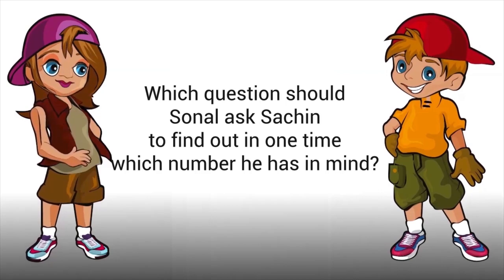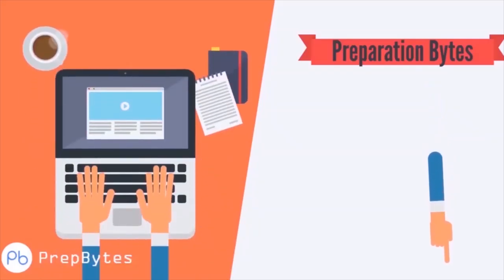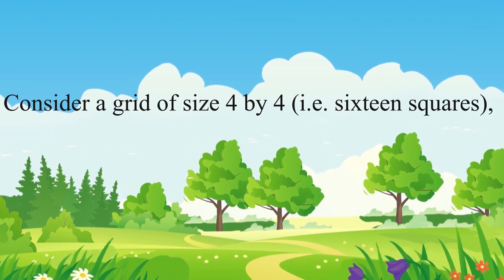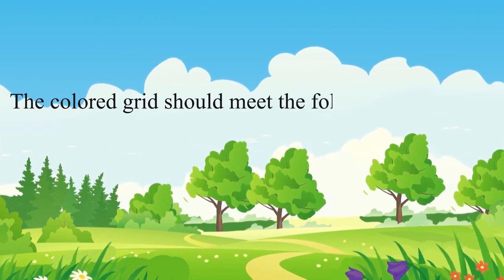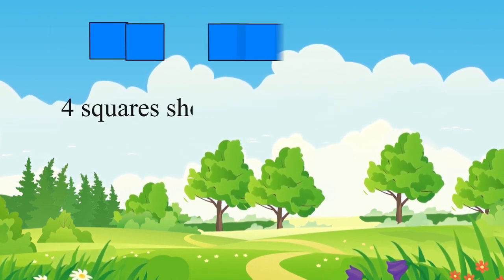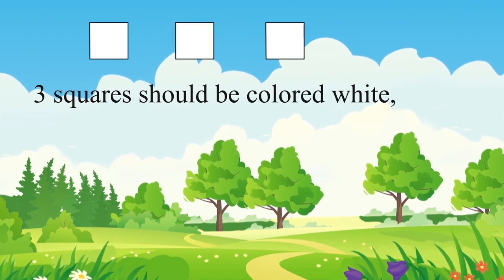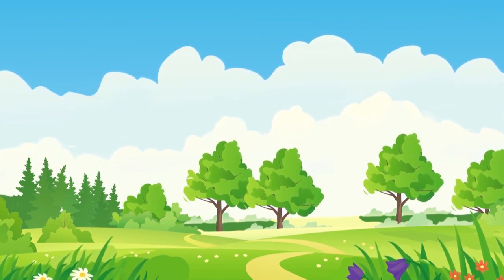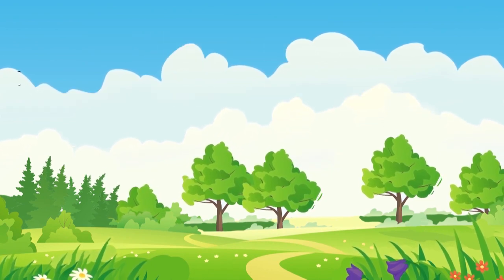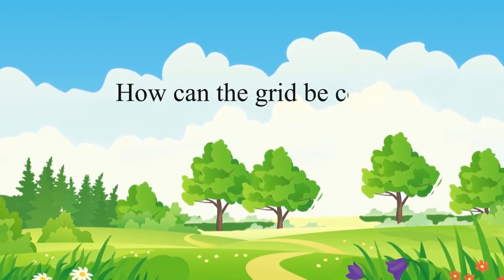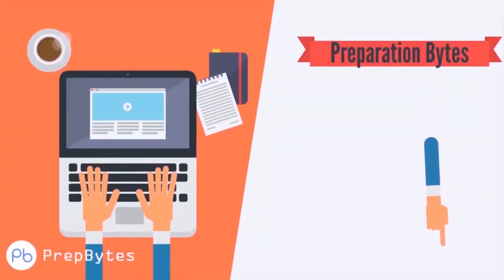Consider a grid of size 4 by 4 — that is 16 squares — where all squares should get a color. The colored grid must meet the following conditions: four squares colored blue, three squares colored red, three squares colored white, three squares colored green, three squares colored yellow. No color may appear more than once in any horizontal, vertical, or diagonal line. How can the grid be colored?